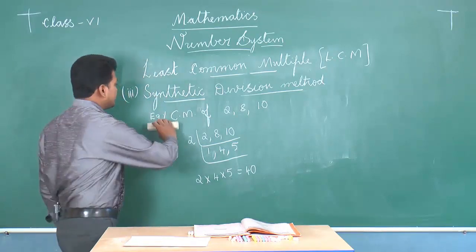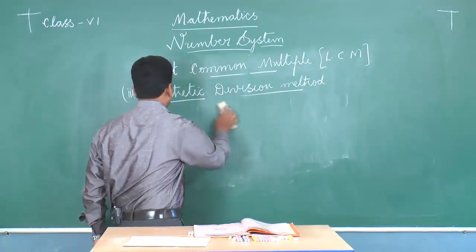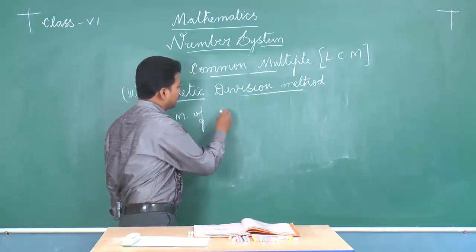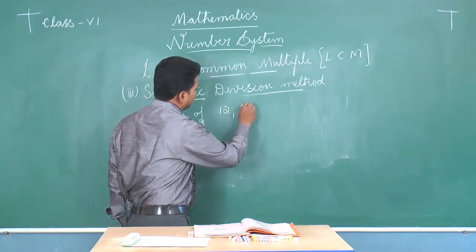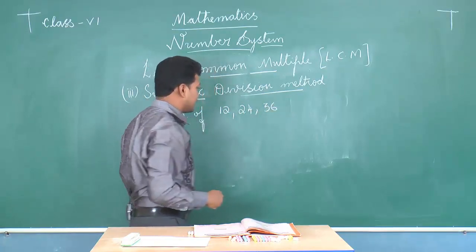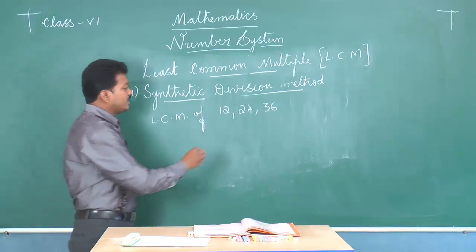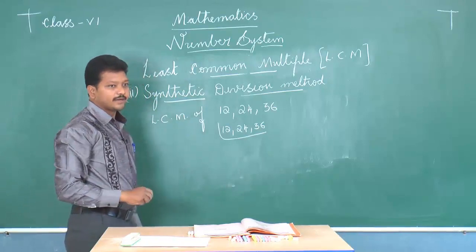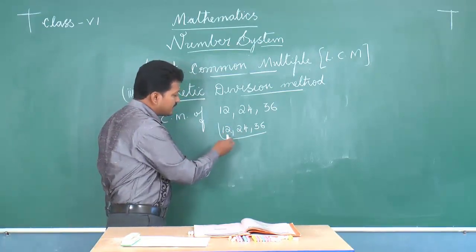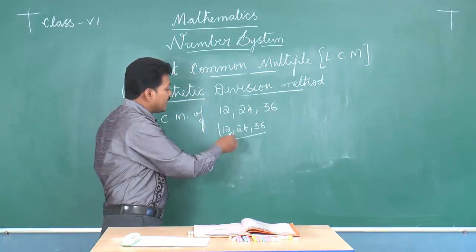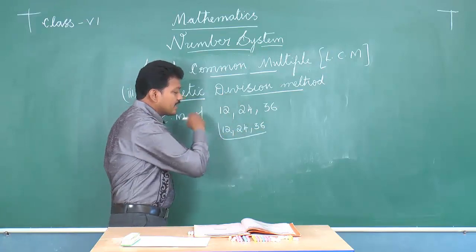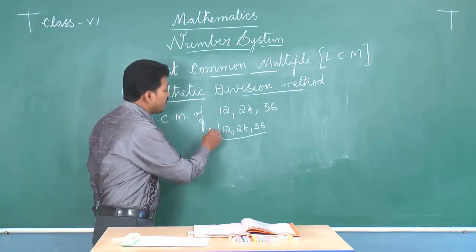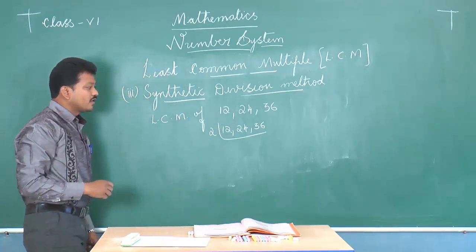Let us go with one more example: find the LCM of 12, 24, and 36. First, we write the given numbers in a row — 12, 24, and 36 — separated by commas. Then we choose a common factor. The units digits are 2, 4, and 6, and numbers ending in 2, 4, 6, 8, or 0 are divisible by 2. Since 2 is also a prime number, it is the most convenient common factor. Let us divide: 12 ÷ 2 = 6, 24 ÷ 2 = 12, 36 ÷ 2 = 18.